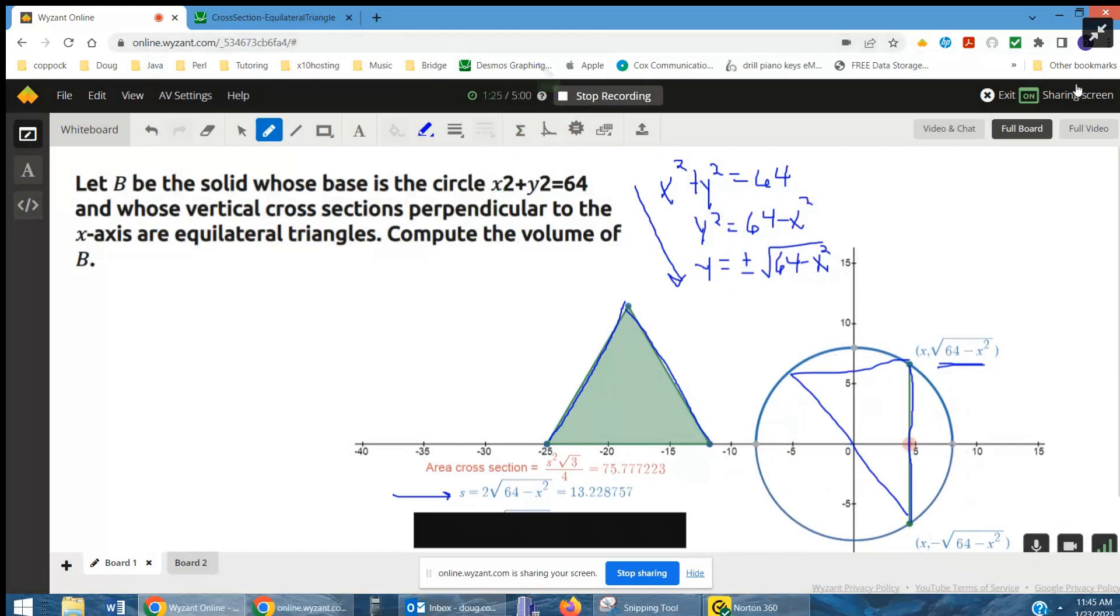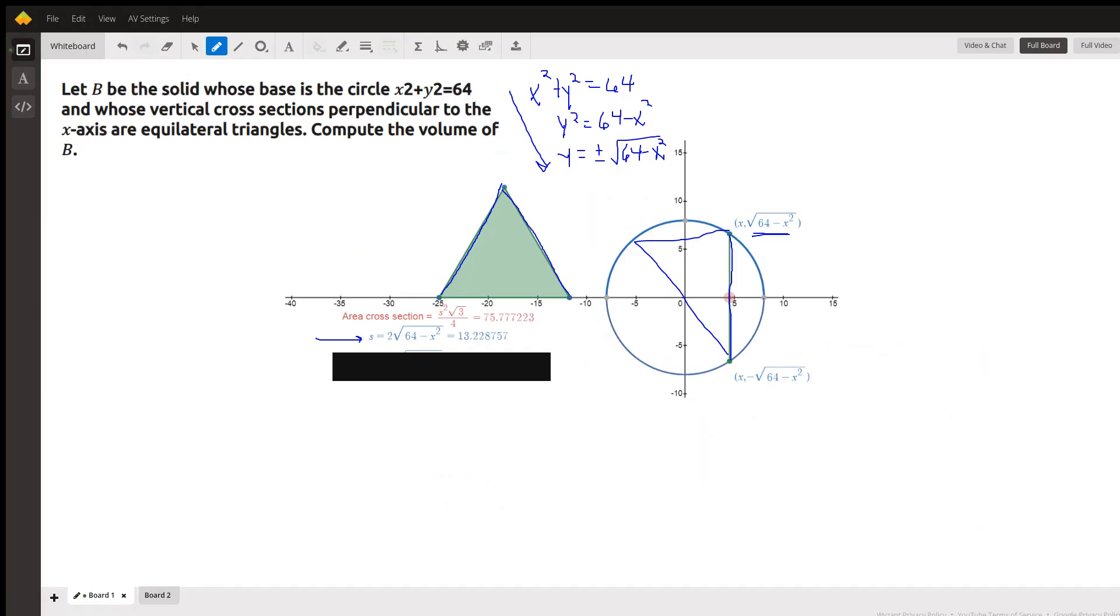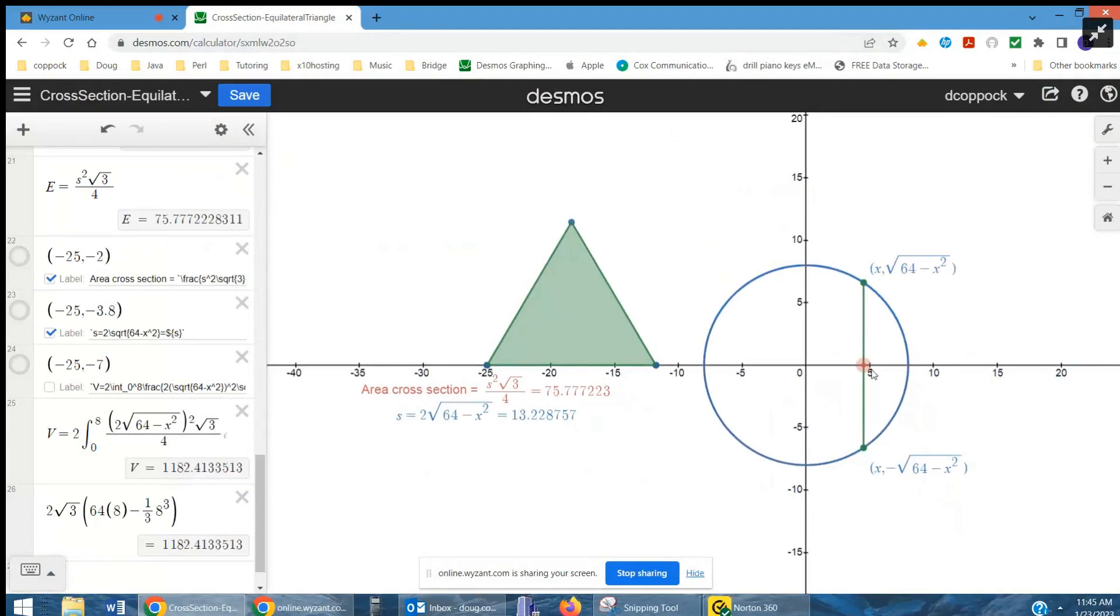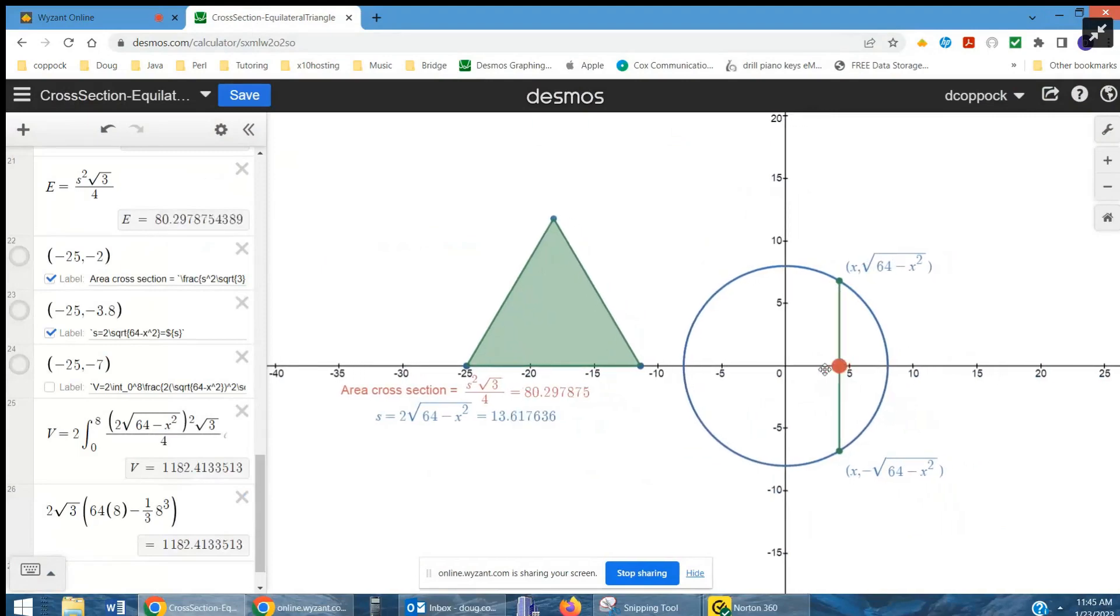And you can see that if I go over to Desmos and slide this along here like this, that the cross section gets bigger and then smaller.